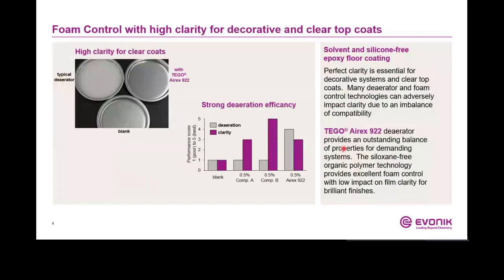I would like to begin with deaerating and compatibility issues. A good example is epoxy clear coats, especially with increasing film thickness. Our recommendation for this application is Tego RX 922 — a 100% deaerator concentrate based on deaerating polymers. Due to the fact that RX 922 is free of any silicone, it provides very good compatibility, as you can see in this picture where we incorporated the deaerators into the hardener resin of an epoxy clear coat.